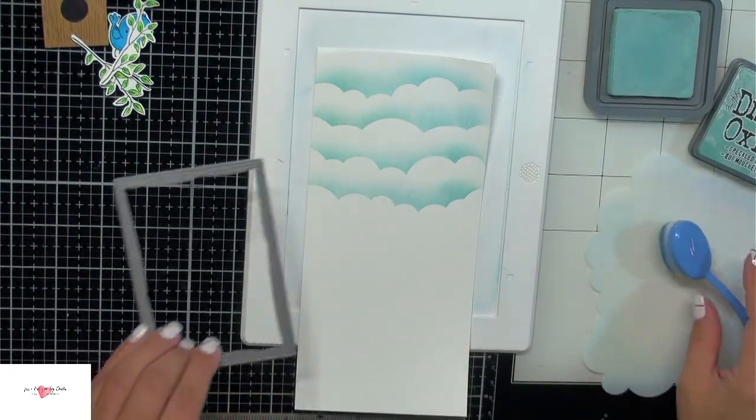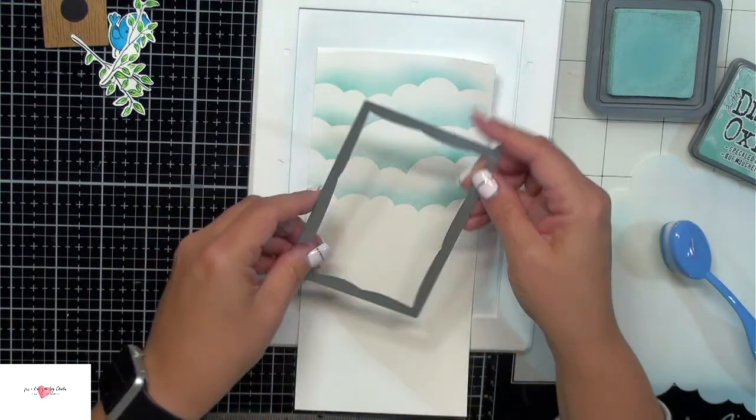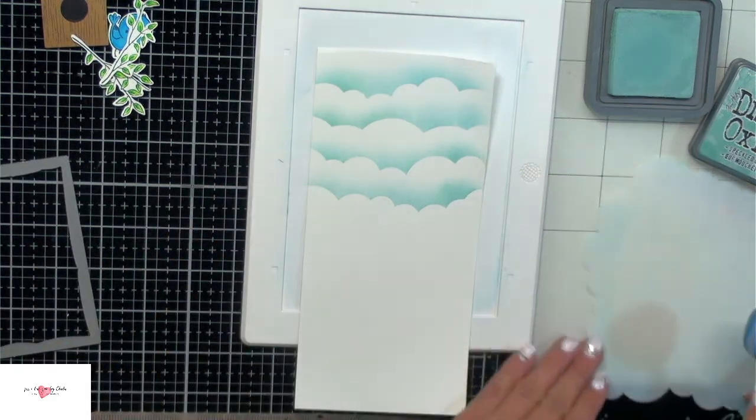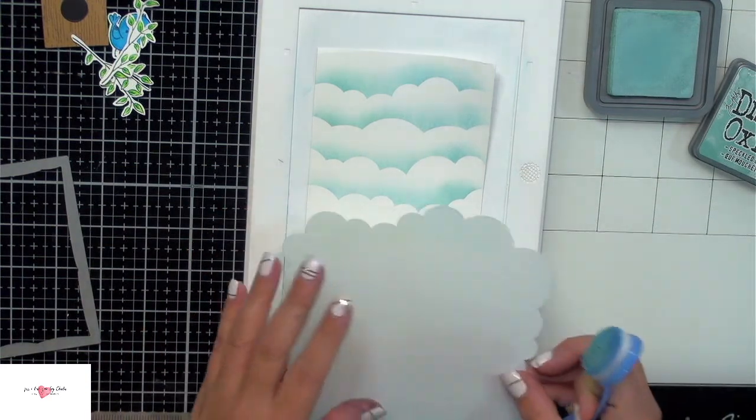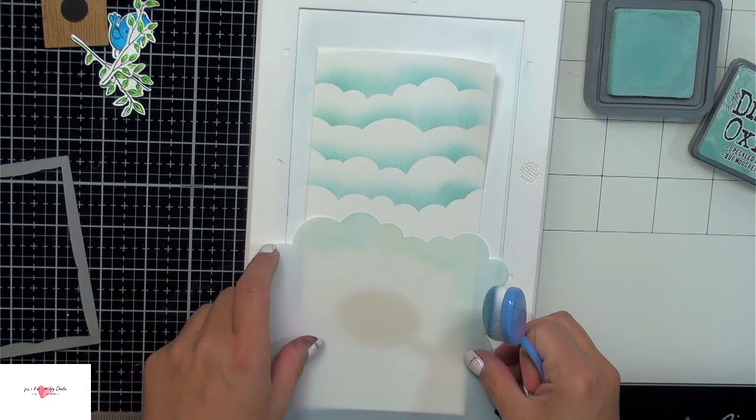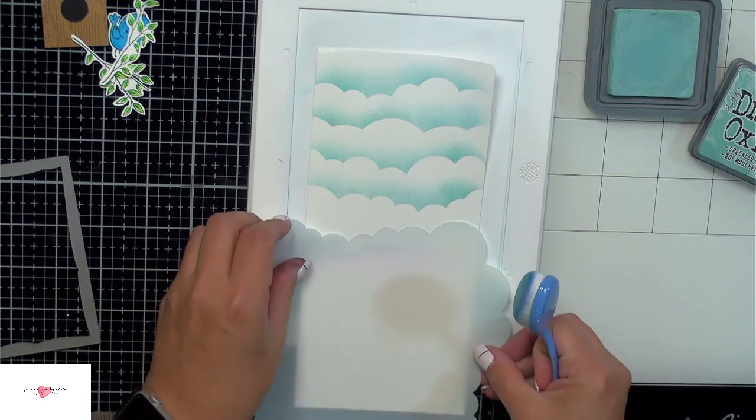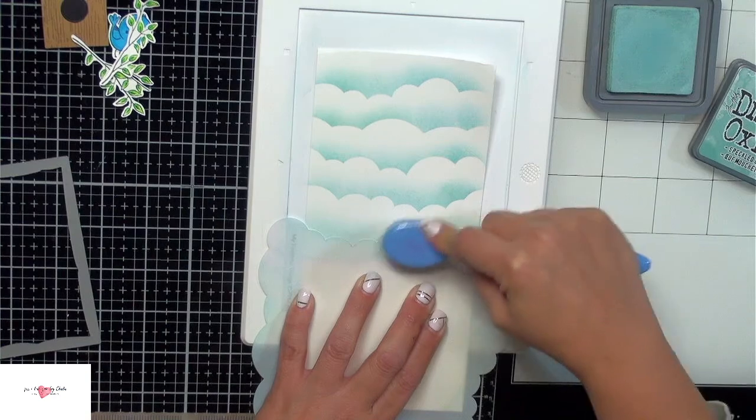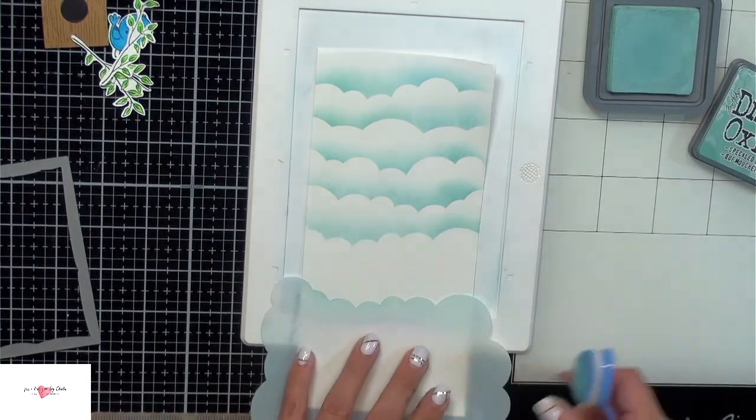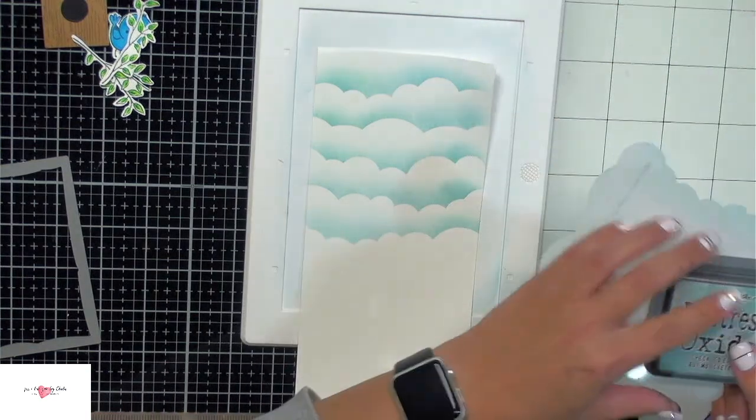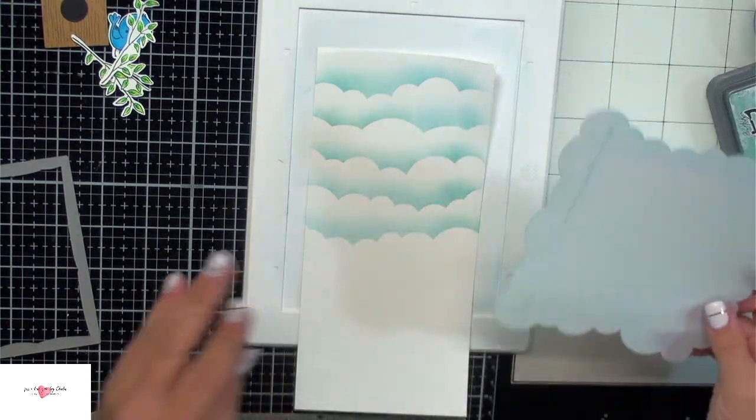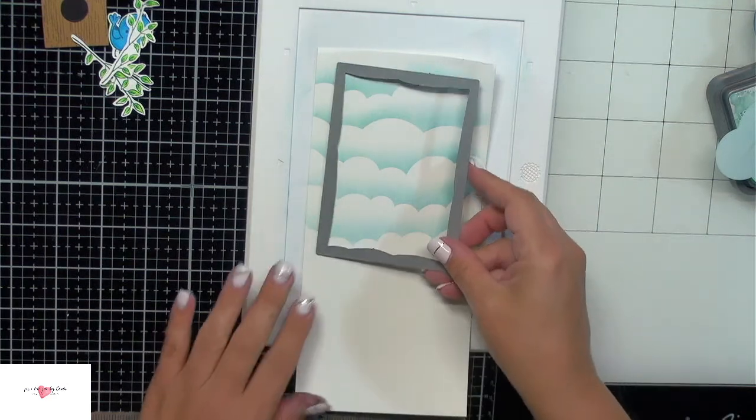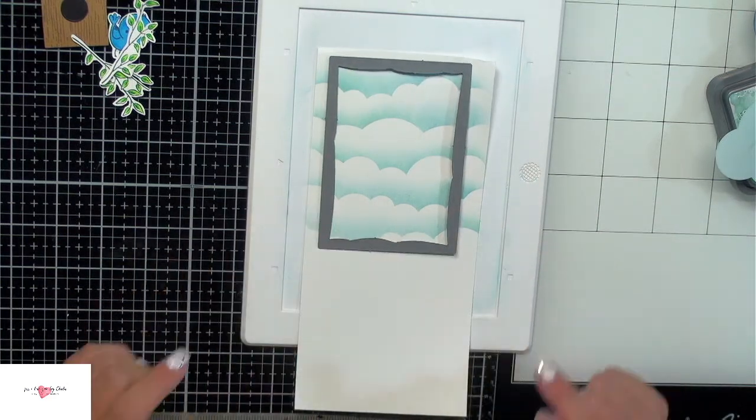I'm just going to bring in, this is my MFT rectangle wonky die set. I'm just going to bring it in and make sure that looks okay. I think I want one more layer of clouds. Let's turn it over. I'm going to do this. There, that should be good. I'm just going to wipe off my stencil. I just use baby wipes to wipe that off. And I'll do that off camera. I'm going to go ahead and run this through my die cutting machine and I'll be right back.